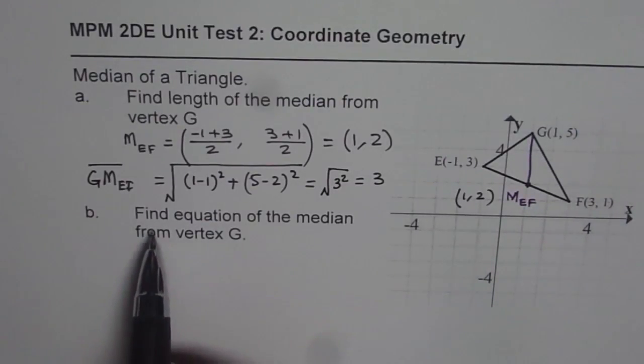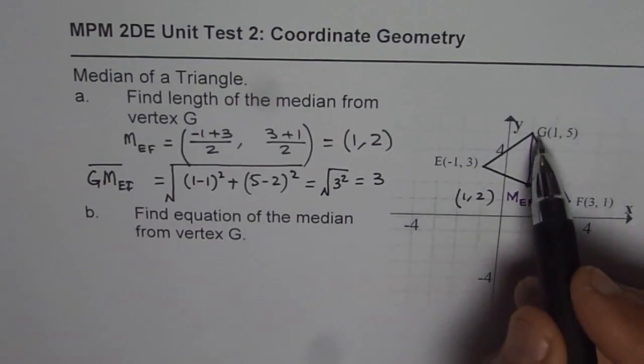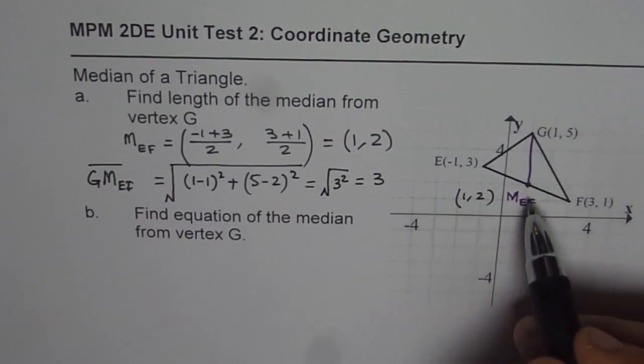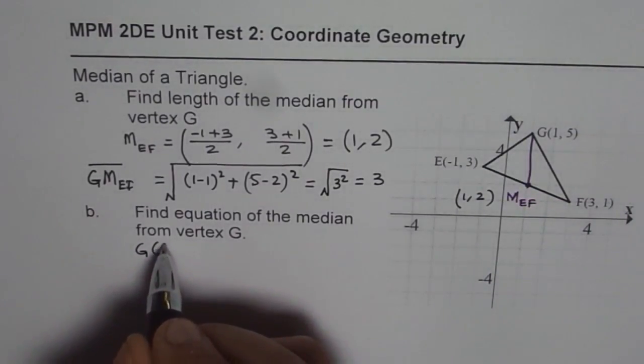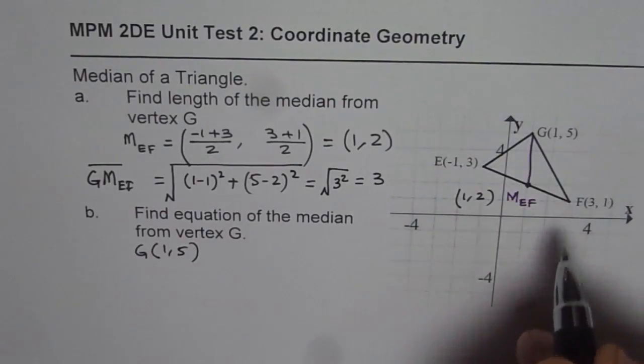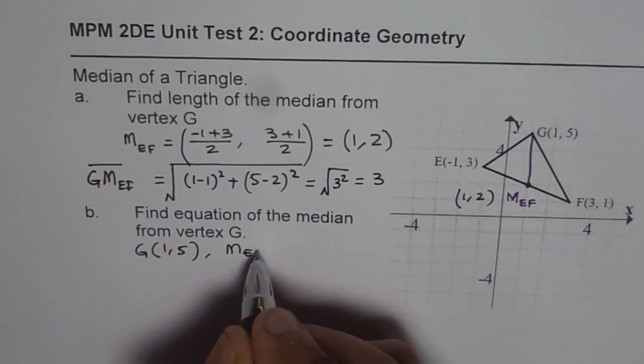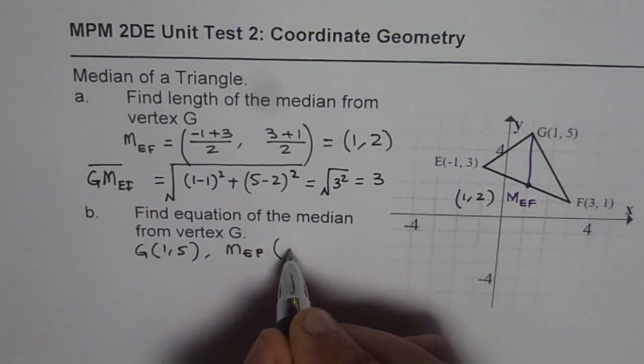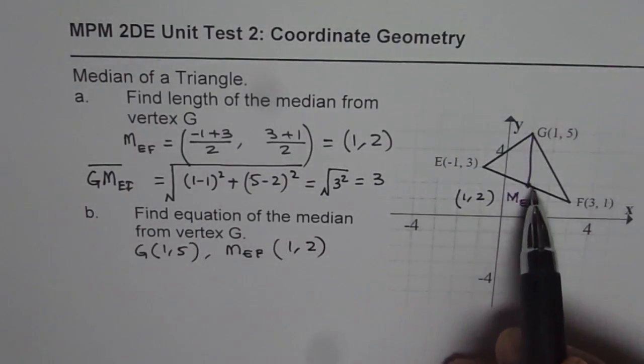Second is, find equation of the median from the vertex G. Now, to find the equation, we know two points. The points known to us are G, which is 1 and 5. And median is the center point of E and F. So that point is middle point of E and F, which we just found as 1 and 2.